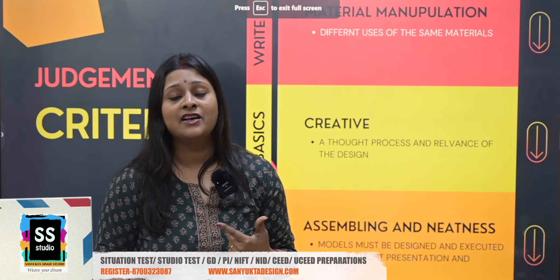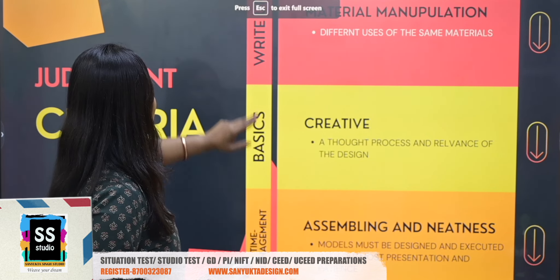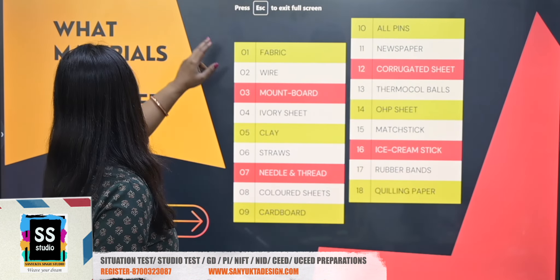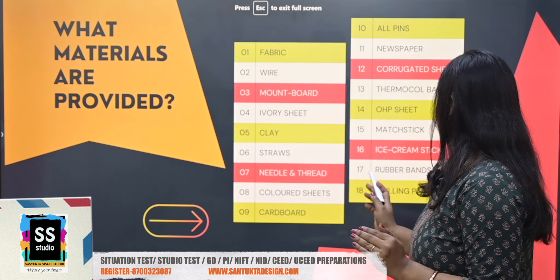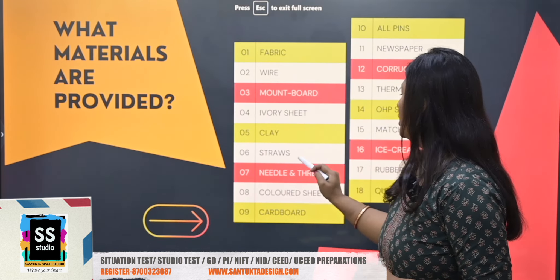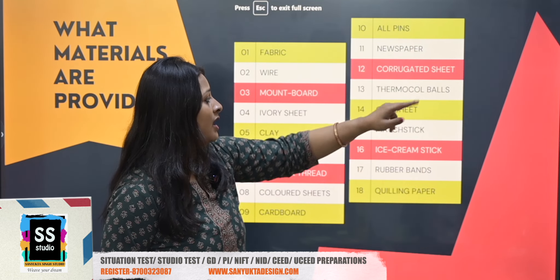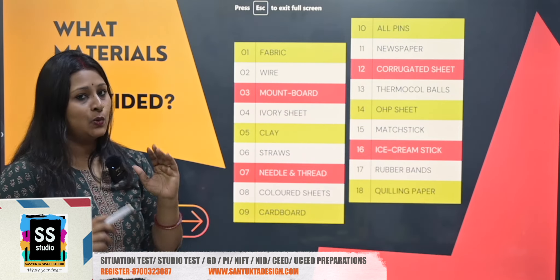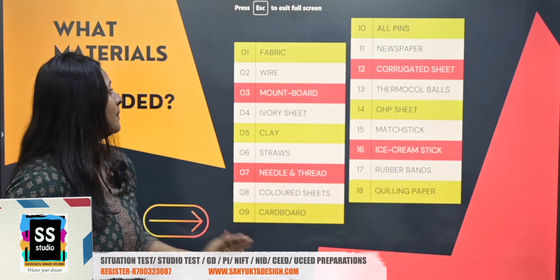You will be asked to explain your model in 75 to 100 words - it might happen in 50 words but your practice needs to be 75 to 100 words. The basics and the write-up are all important areas through which you will be judged. The materials which are provided for your situation test are: fabric, wire, mount board, ivory sheet, clay, straws, needle and thread, colored sheet, cardboards, all pins, newspaper, corrugated sheet, thermocool balls, OHP sheet, matchstick, ice cream stick, rubber band, and quilling paper. With quilling paper you won't be provided the tool - you have to practice with pencil or compass. There are also some add-ons and some eliminations each year.